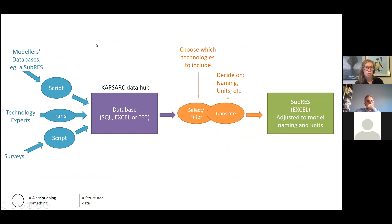This is a short sketch of the system. What we need to define and would like to do within this project is, first, create scripts that can translate different kinds of SUBRES into the database on the CAPSARC data hub. Then, make a script that allows you to define your own database based on a selection filter — choosing which technologies to include and ensuring the correct naming conventions for your model.